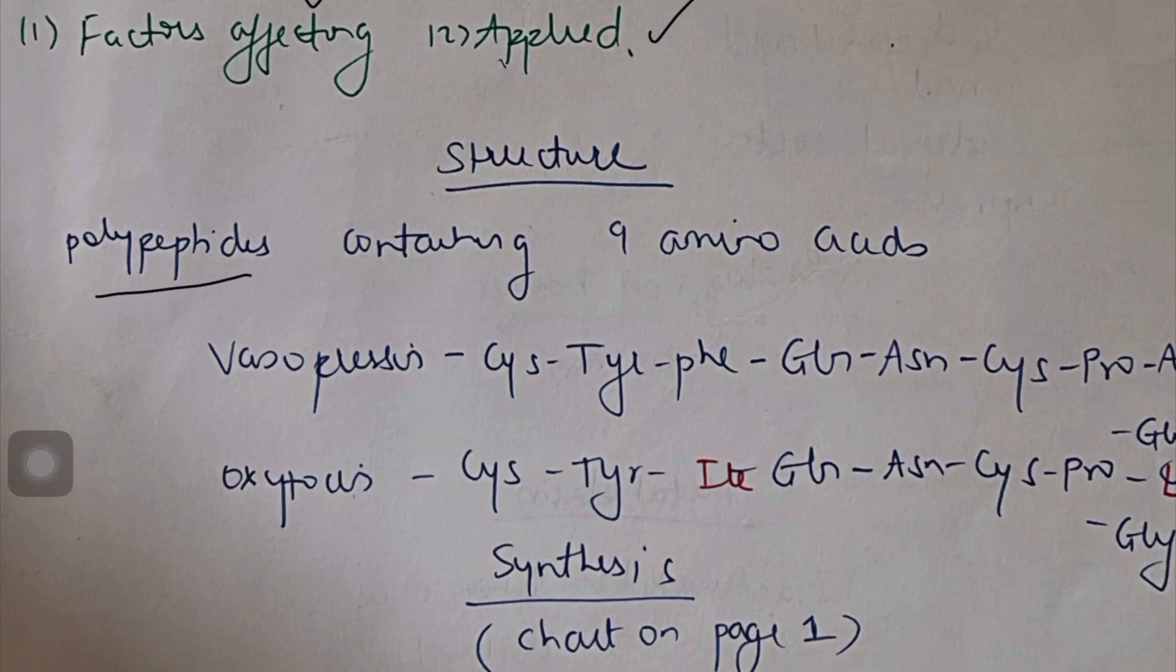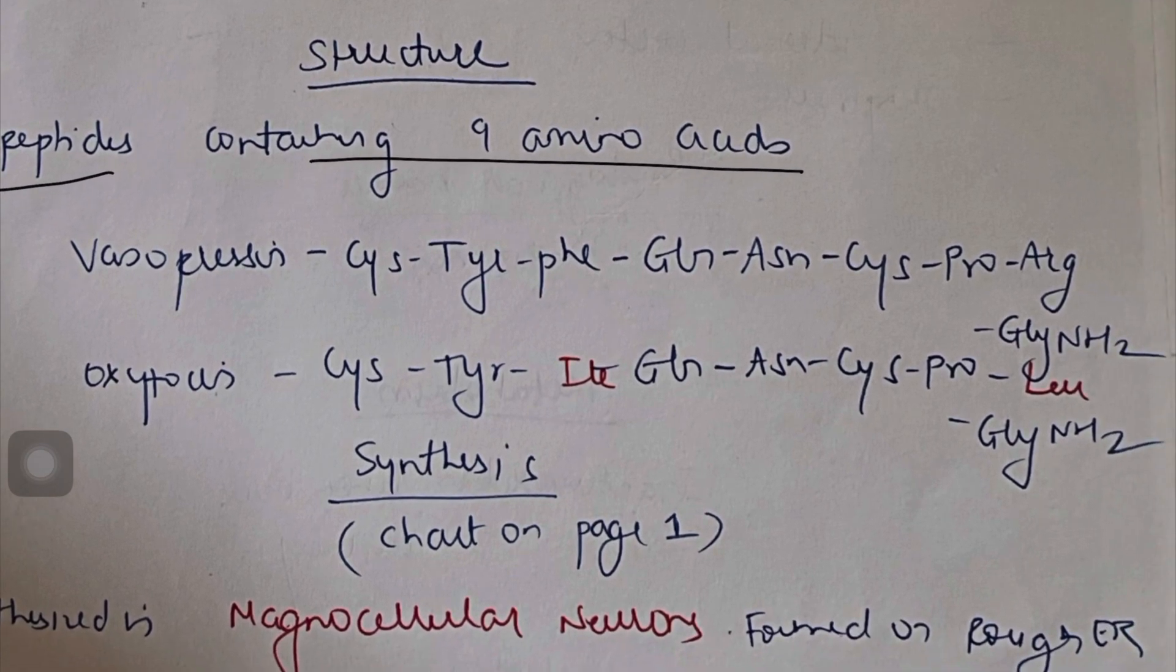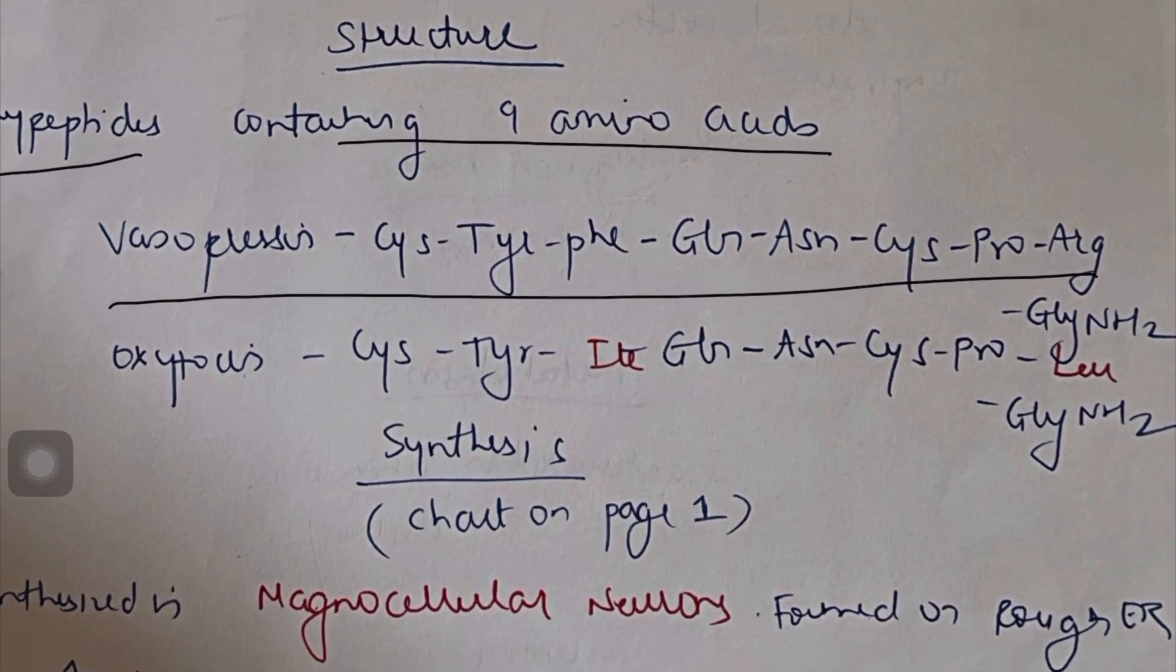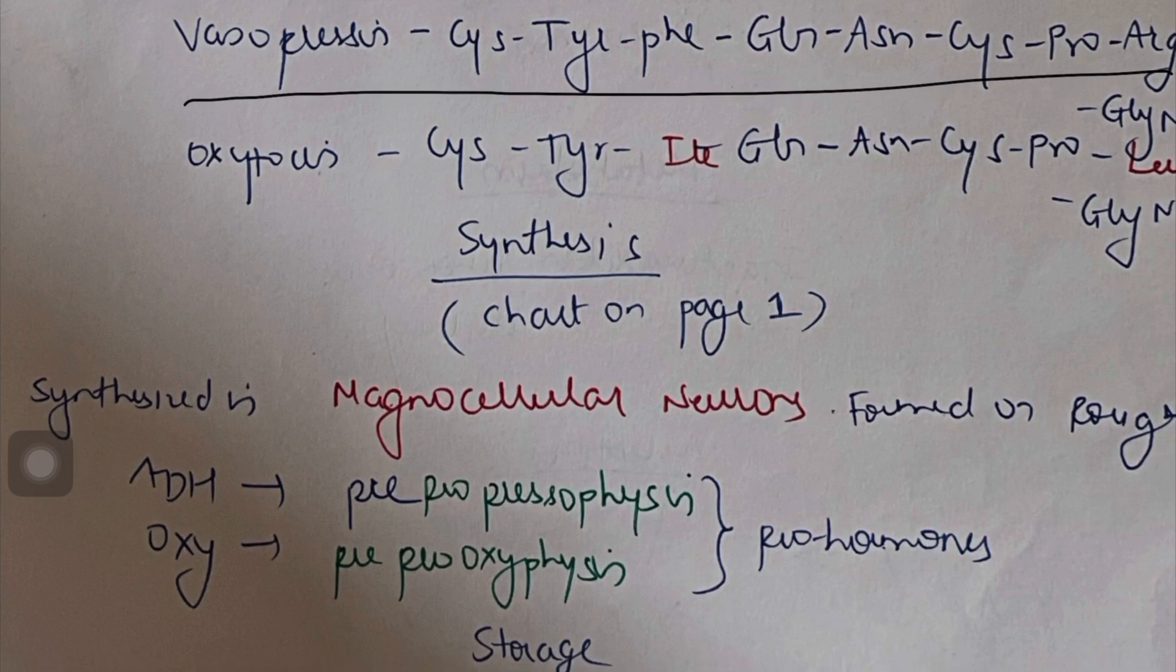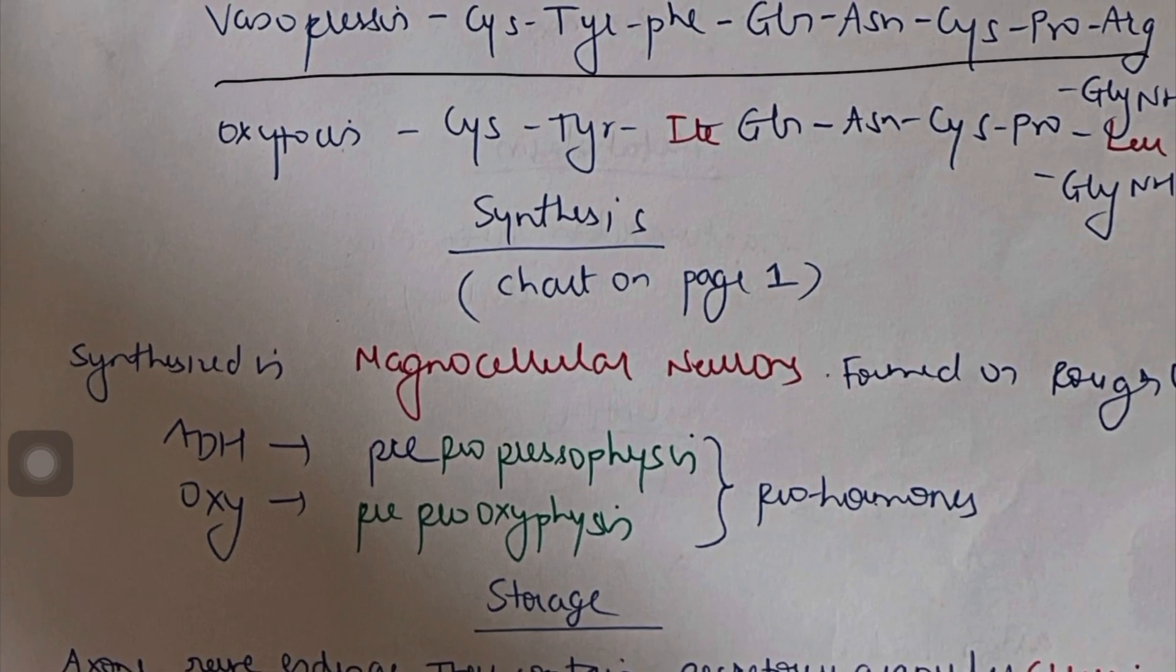The hormone is actually a polypeptide containing 9 amino acids. So for vasopressin, you can write down this. The synthesis is already done on the first page. You draw that flow chart and the diagram. So that you can draw in synthesis. It is synthesized in magnocellular neurons.